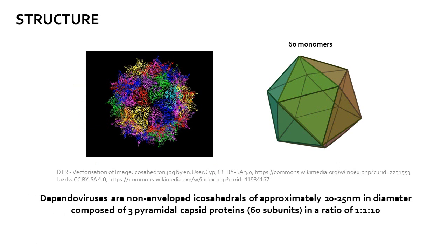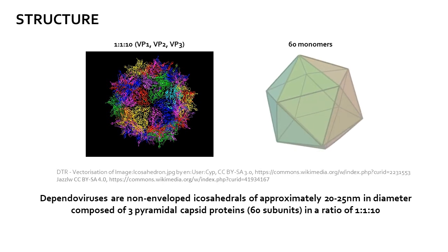The viral shell, or capsid, is comprised exclusively of proteins and has no exterior lipid envelope. The shell is comprised of three proteins, called VP1, VP2, and VP3, in a ratio of approximately 1 to 1 to 10. During assembly, these pyramidal proteins form an icosahedral, nearly spherical particle comprised of approximately 60 monomeric protein units. The overall particle diameter is about 20 to 25 nanometers, which makes it one of the smallest viruses even among the non-enveloped viral species.